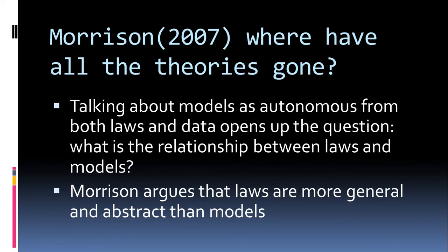This models-as-mediators perspective opens up the question I'm trying to tackle, because previously we were trying to reduce laws to models — now we have a question of what the relationship between laws and models actually is. Morrison, in her 2007 paper, argues that laws are more general and abstract than models: there's a kind of continuous scale where you've got concrete specific models at one end and very abstract high-level laws at the other, with laws and models related by being more or less general.